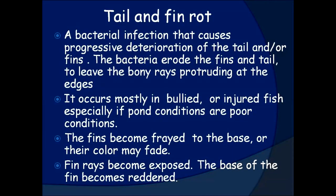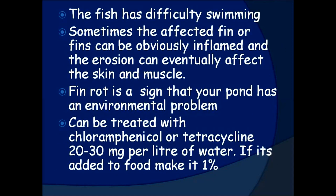Tail and fin rot. A bacterial infection that causes progressive deterioration of the tail and/or fins. The bacteria erode the fins and tail, leaving the bony rays protruding at the edges. It occurs mostly in bullied or injured fish, especially if pond conditions are poor. The fins become frayed to the base or their color may fade. Fin rays become exposed, the base of the fin becomes reddened, and the fish has difficulty swimming. Sometimes the affected fin can be obviously inflamed, and the erosion can eventually affect the skin and muscle.